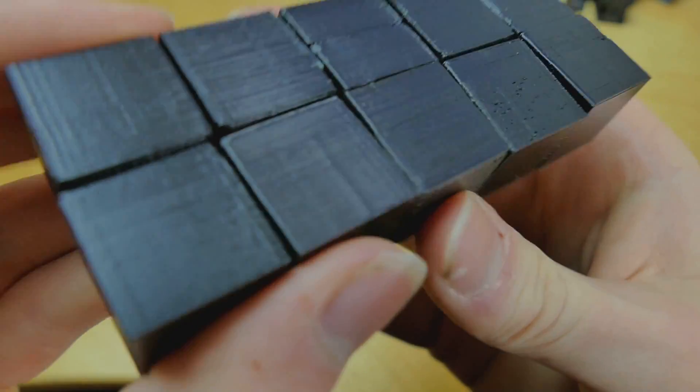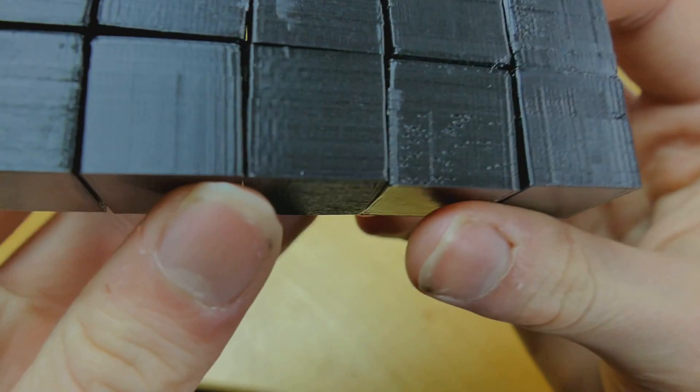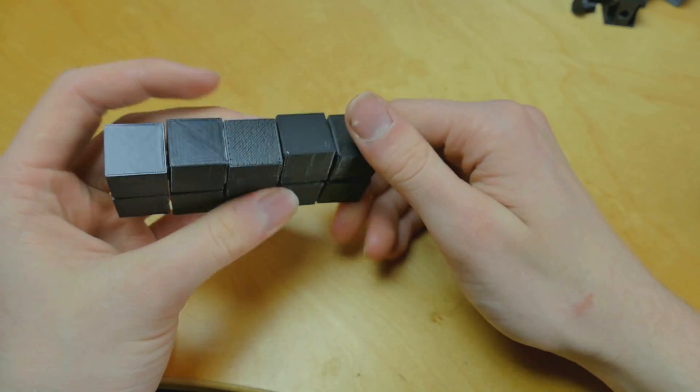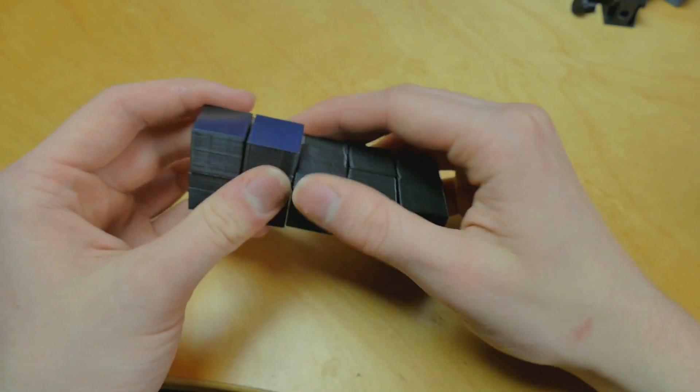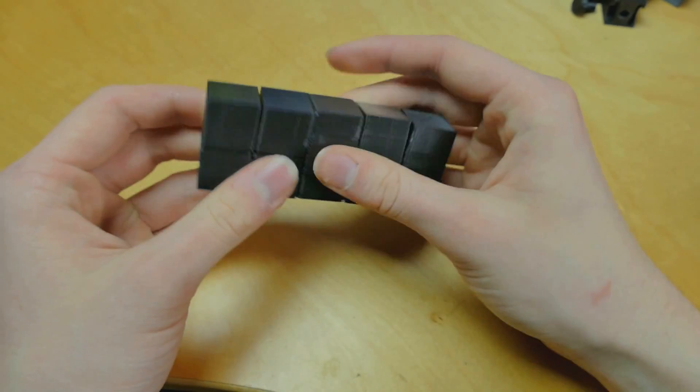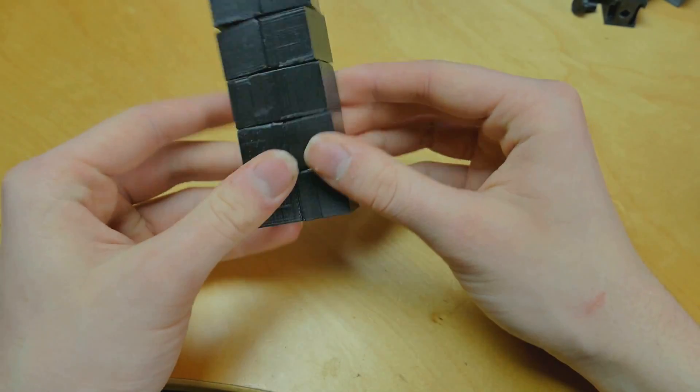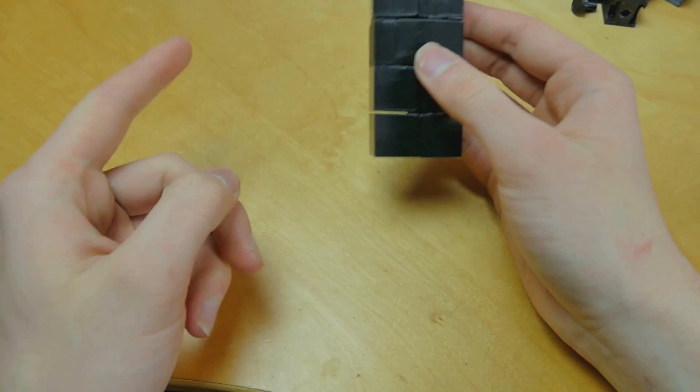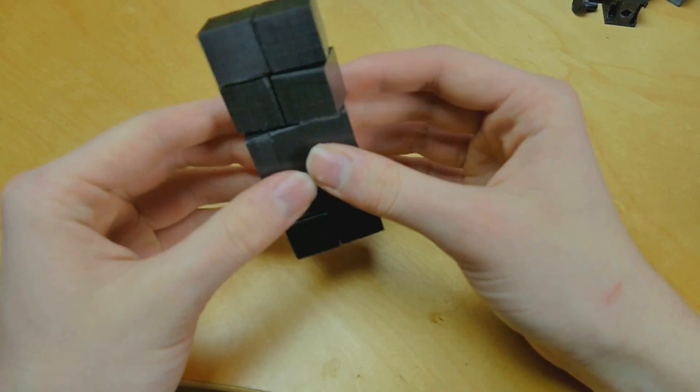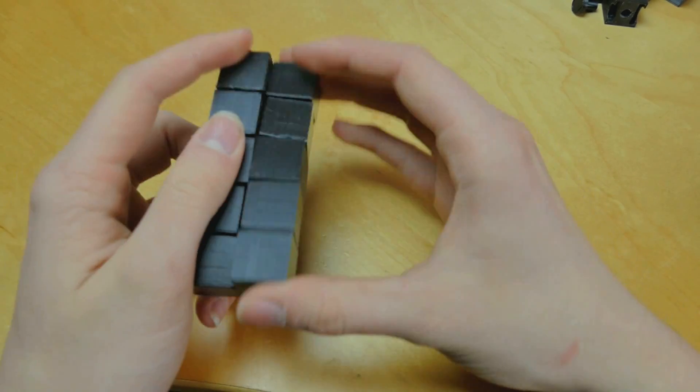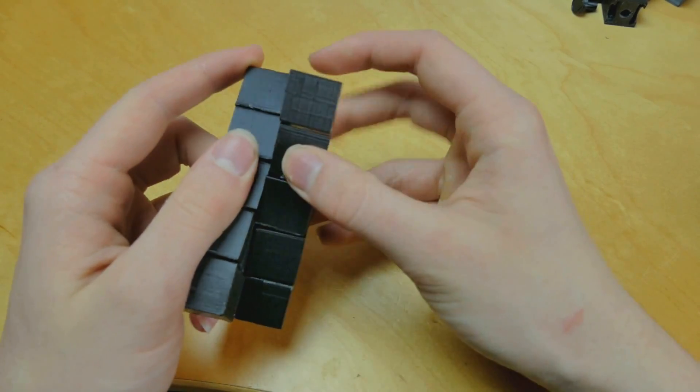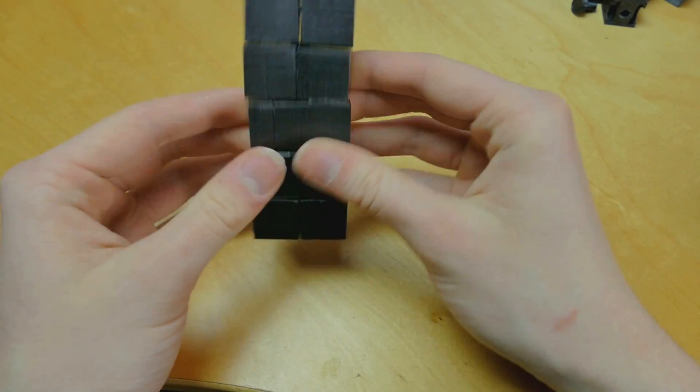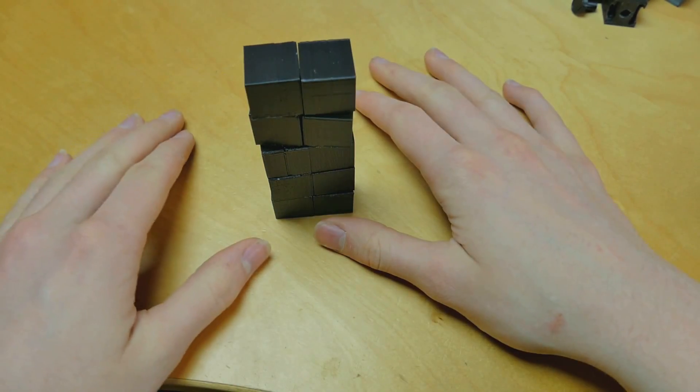If anyone has a 3D printer and is interested in making one of these, I'll leave a link in the description to Thingiverse where I've uploaded the files. One tip if you're going to make one: print the pin with four perimeters so it's extra strong because it does take a bit of force to get it to fit, which is the whole point, so it keeps it nice and tight. Anyways, thanks for watching.